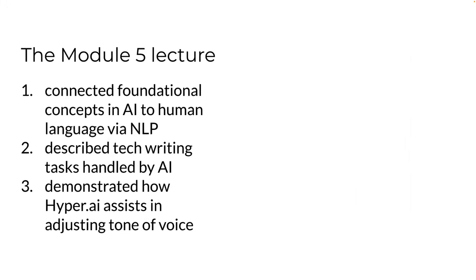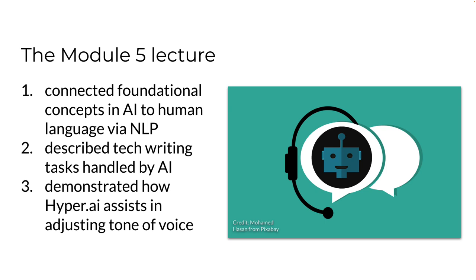I want to take a minute to summarize what I've covered in this lecture, because I know quite a lot of it is new to you. First, I tried to make it clear how AI is totally dependent on natural language processing — that is what makes it appear intelligent. It can mostly learn to understand what human language is intending or meaning, and then generate responses that are often appropriate.